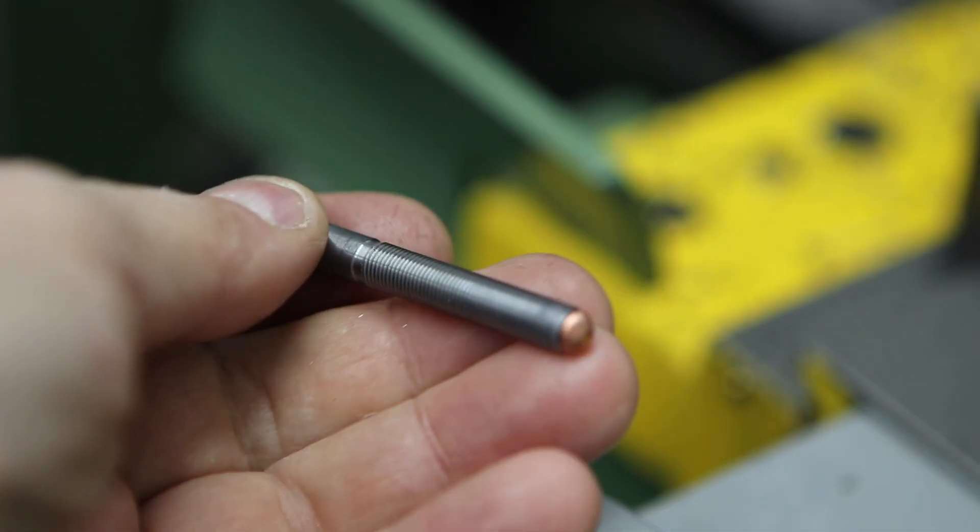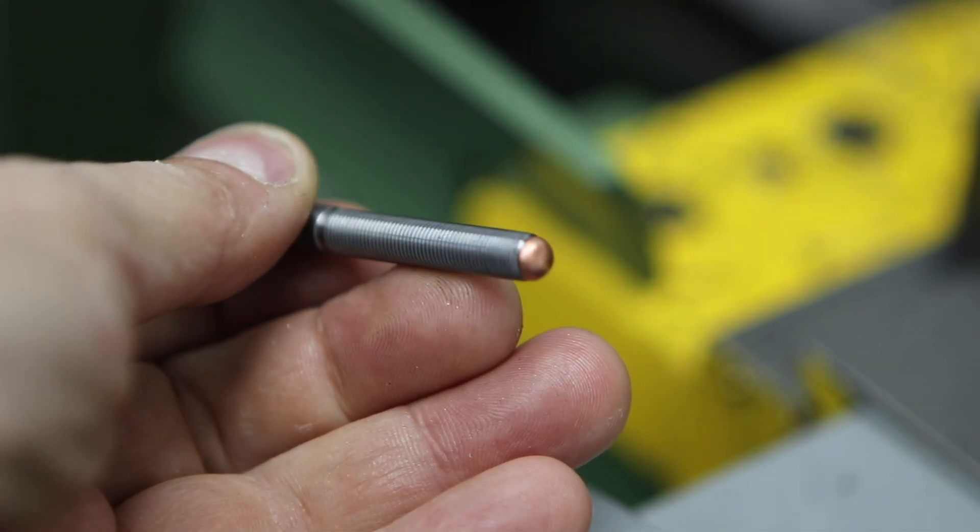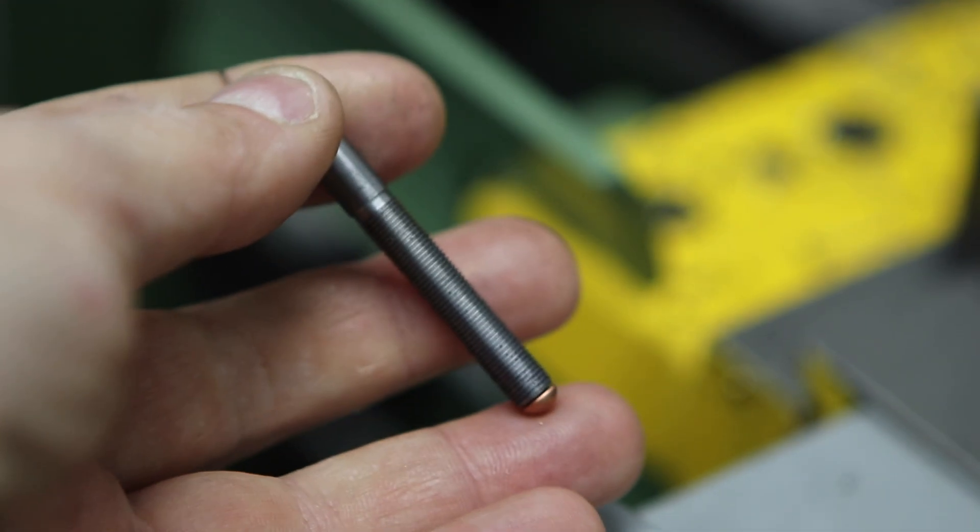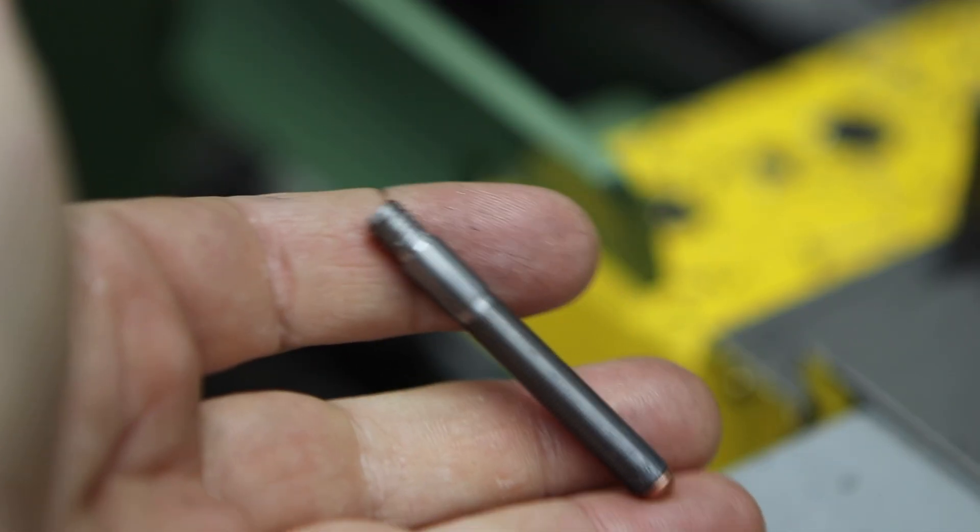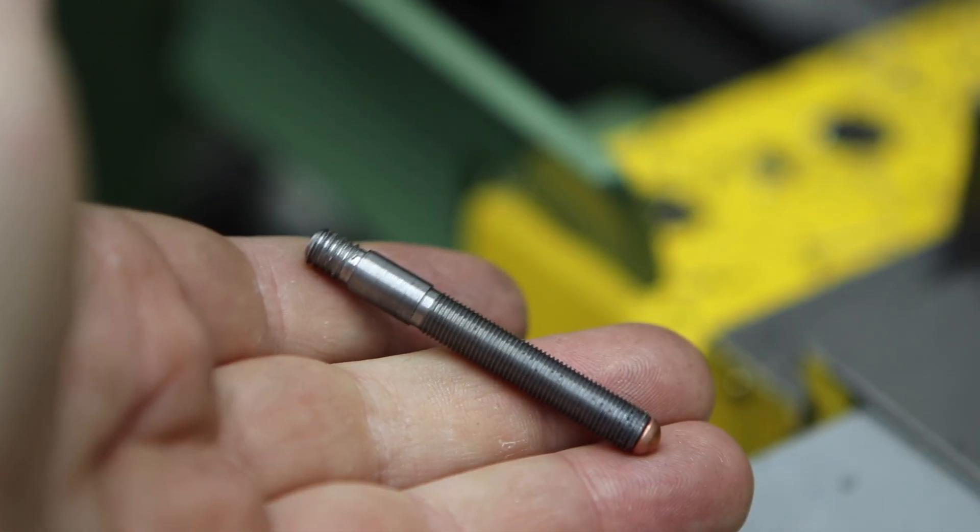Off camera I made this shaft for the jack screw. It's threaded quarter 40 down the body and M6 on the top for the cap and it's also got a little copper rivet in the bottom there to stop it marking the base plate.